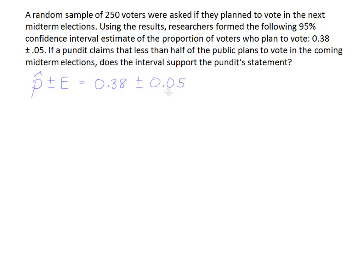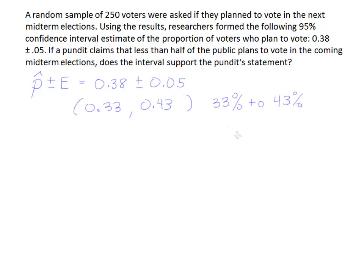From there we can put it in traditional interval notation. 38% minus 5% is 33%, and 38% plus 5% gives you 43%. So the interval is 33% to 43%, which tells us the true percentage of people who plan to vote should be somewhere between 33% and 43% of the population.